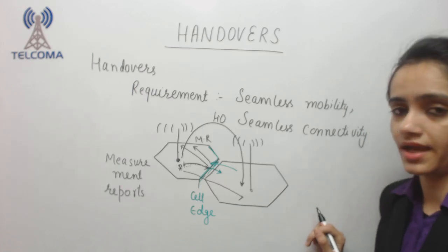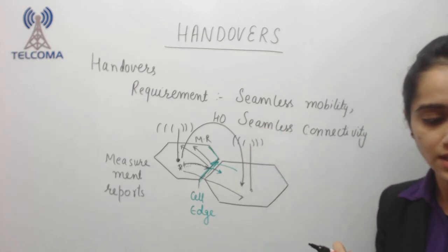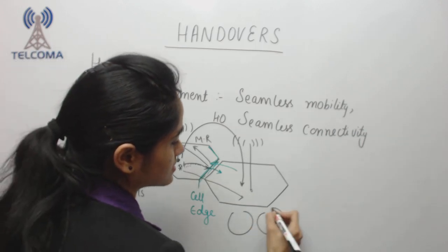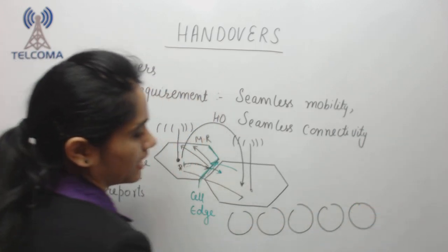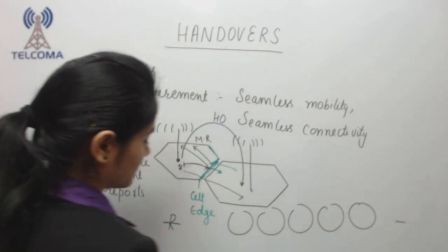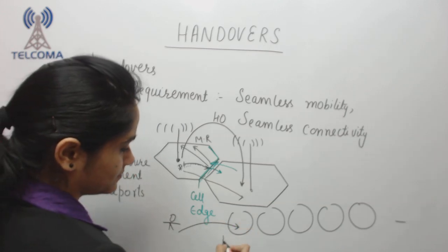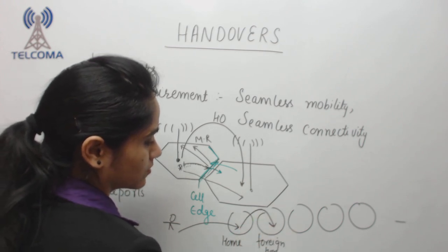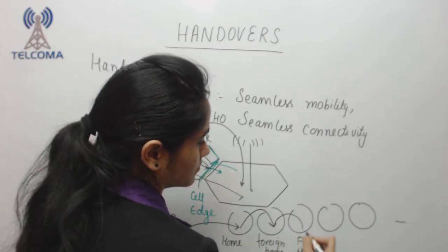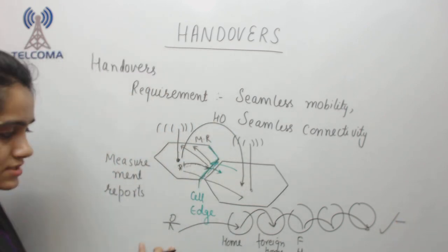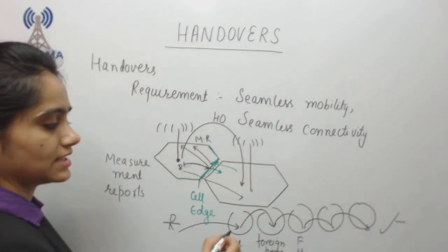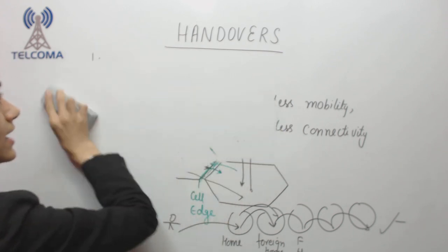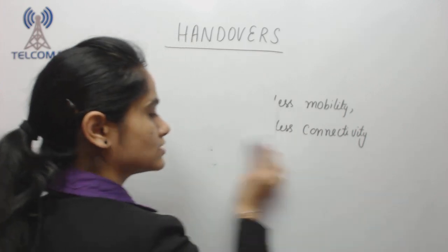Handovers are required for seamless mobility. If we are moving in an area with a number of cells — cell one, cell two, cell three, cell four, cell five — the user starts a call and moves through each cell. The first cell is the home cell, the next becomes foreign, and so on. After passing through a number of cells, each has given a handover to the user. This entire process is the handover process, required for seamless mobility and continuous connectivity.